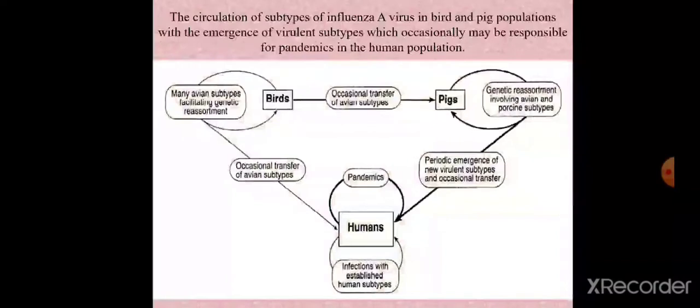A flow diagram shows the circulation of subtypes of influenza A viruses in birds and pig populations with the emergence of virulent subtypes that occasionally may be responsible for pandemics in humans. Many avian subtypes facilitate genetic reassortment; occasionally these avian subtypes transfer to humans or to pigs. In pigs — which act as mixing vessels — both avian and porcine subtypes undergo genetic reassortment, generating new subtypes that periodically emerge as virulent strains.